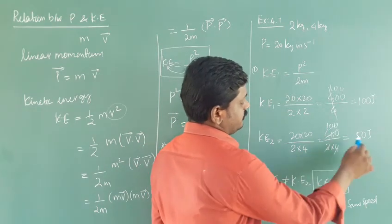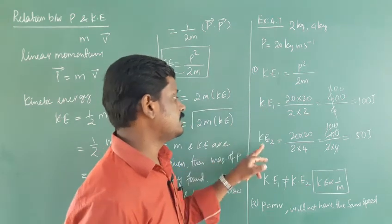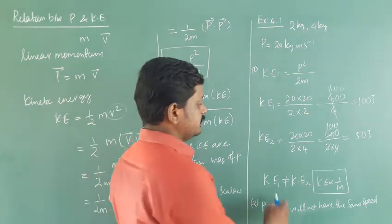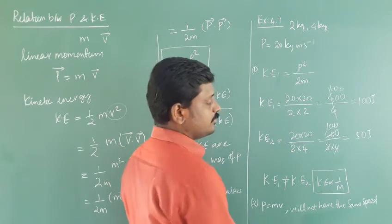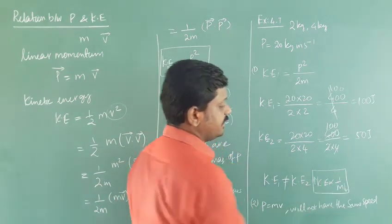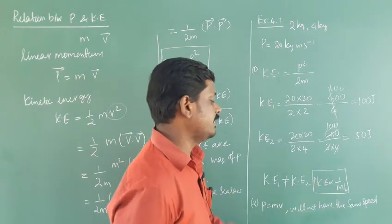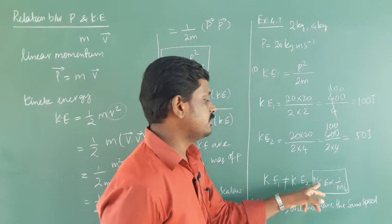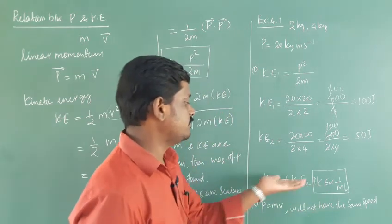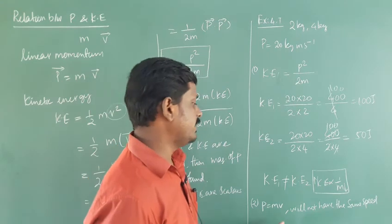So the kinetic energy of the first particle is greater than the second particle, because kinetic energy is inversely proportional to mass. If mass decreases, kinetic energy increases. So for lighter particle, kinetic energy value is high. For heavier particle, kinetic energy value is somewhat low.